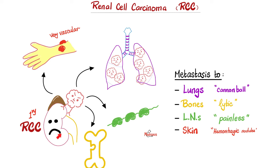When RCC metastasizes, it can go to the lungs — not one mass but multiple masses, giving a cannonball appearance. If it goes to bones, it causes lytic (not blastic) bone lesions. If it metastasizes to lymph nodes, they will be painless — cancer is painless; infection is painful. It can also metastasize to the skin, giving vascular hemorrhagic nodules, since this tumor is vascular.